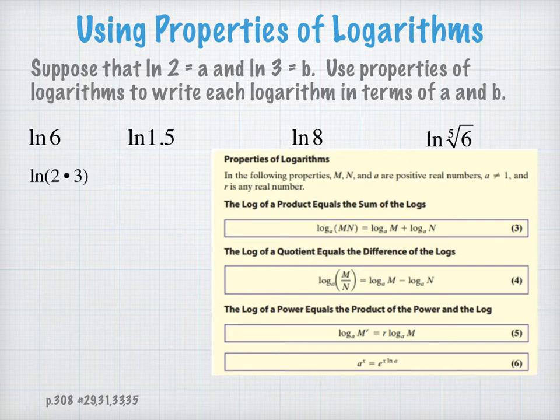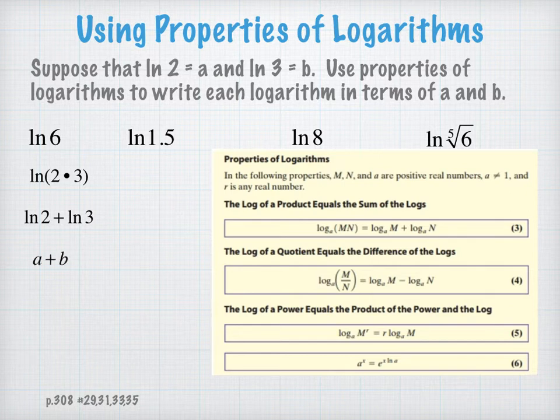Well, I can write 6 as 2 times 3. Now I can apply the first property that the log, in this case the natural log, of a product is equal to the sum of the natural logs. Now I was given that the natural log of 2 is a and the natural log of 3 is b, so I have solved the first problem.